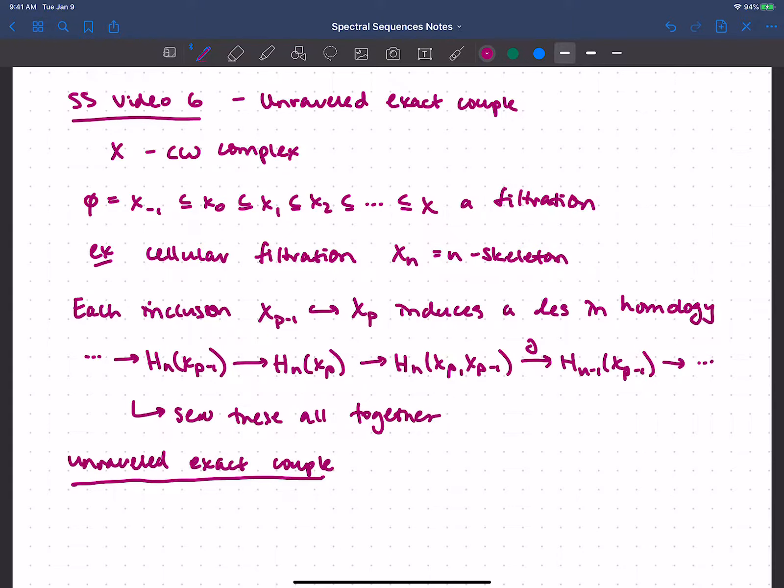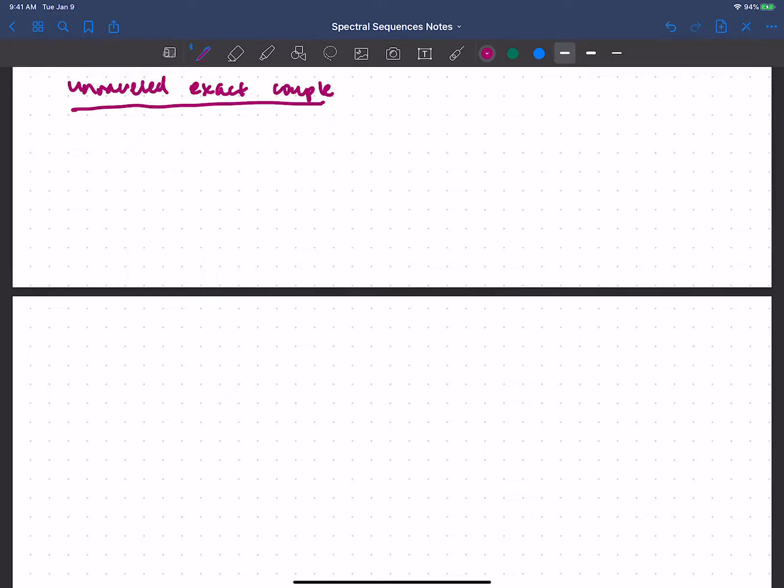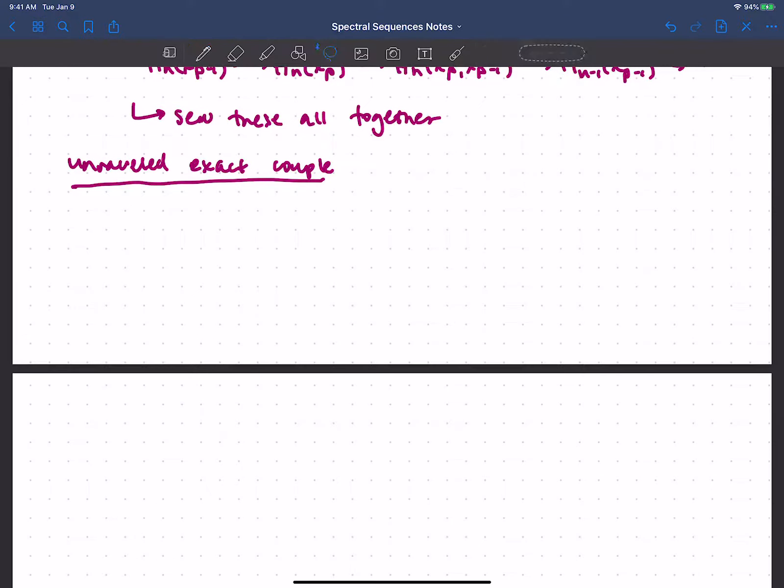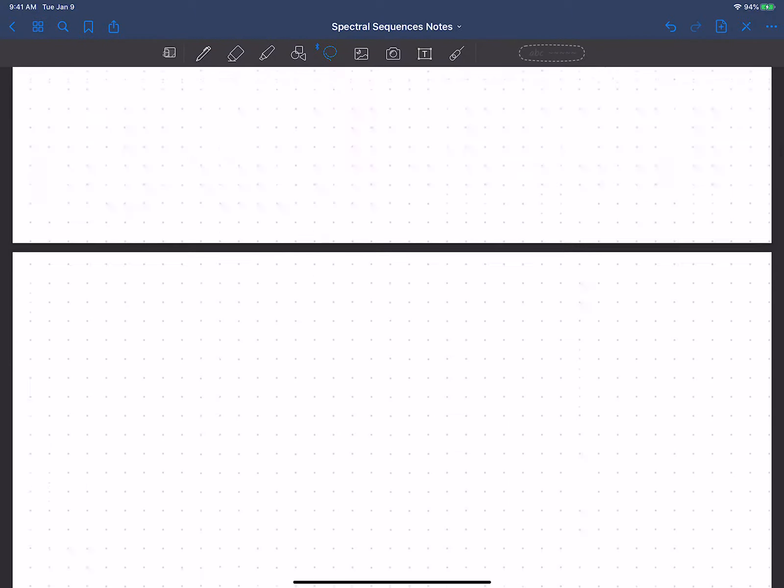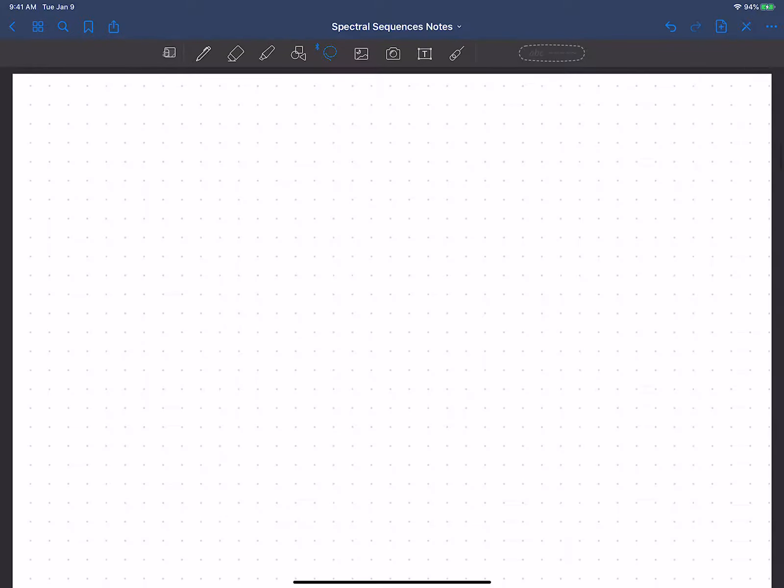We'll wrap it all up into a nice succinct thing later. But for now, what is an unraveled exact couple? Well, I just want to take all of these sequences and sew them together. I'm realizing I'm going to need a lot of space to do this, so let's just get a fresh page and start to draw our unraveled exact couple.